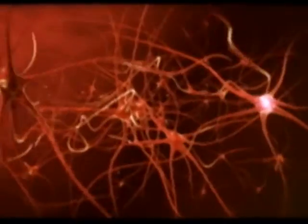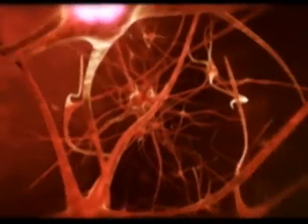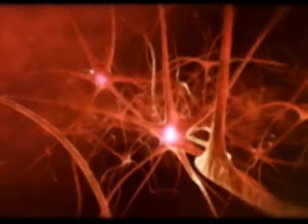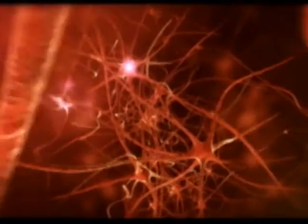What many people don't know is that there are over 100 million neurons in the tissues of the digestive system, running from the esophagus to the anus.